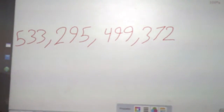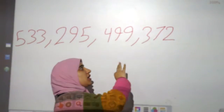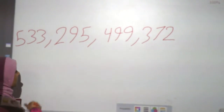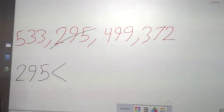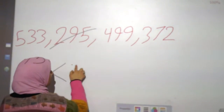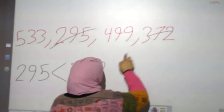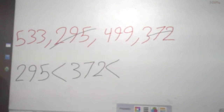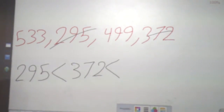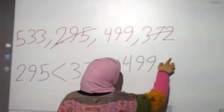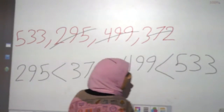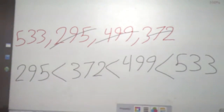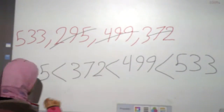Start with the small one. Here 500, 200, 400, 300 — the small one is 295. Now where is the small from 500, 400, 300? Excellent, it will be 372. Now 500 or 400? 499 — but 500 is bigger, so the small one is 499. The big one is 533. So ordering: 295, 372, 499, 533.